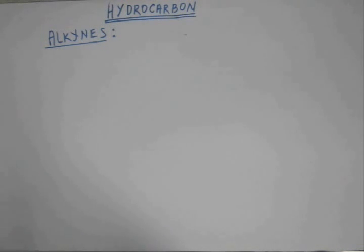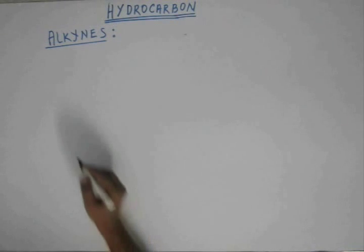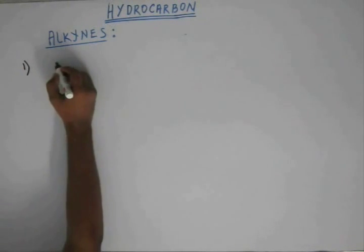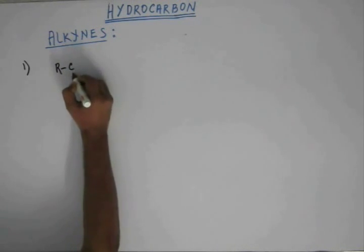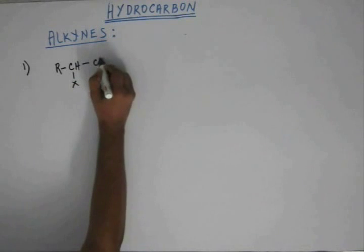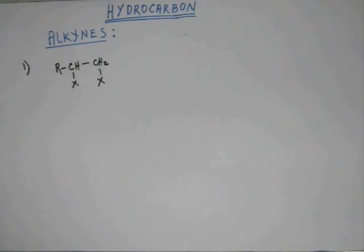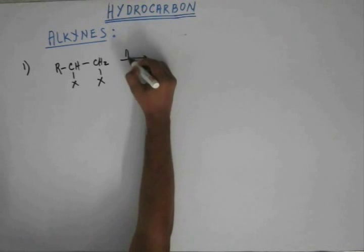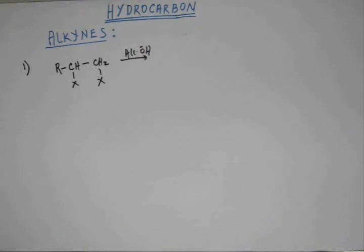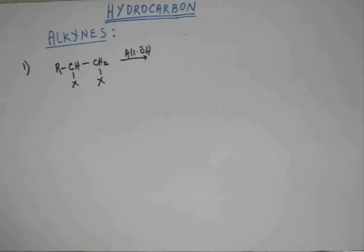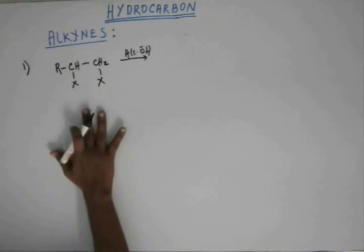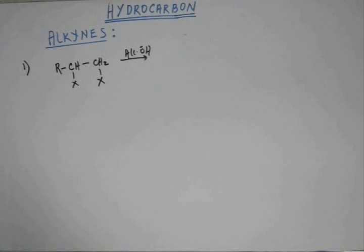Alkynes can be produced by various methods, and the first method is through elimination. Suppose I have a vicinal dihalide. To this vicinal dihalide I'm going to add alcoholic OH⁻. Alcoholic OH⁻ is a base, while aqueous OH⁻ is a nucleophile — this we have known for a long time. Alcoholic OH⁻, being a base, carries out elimination.